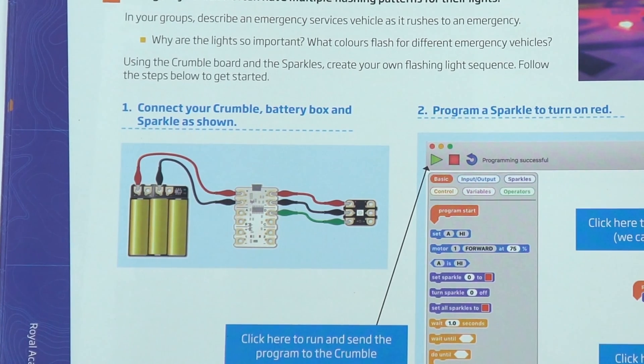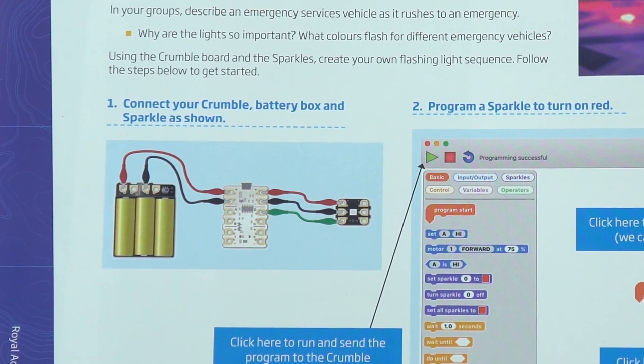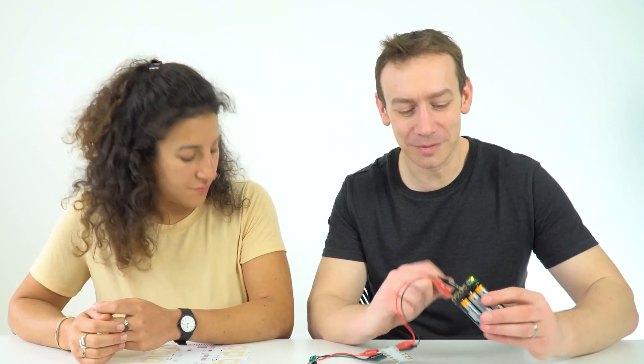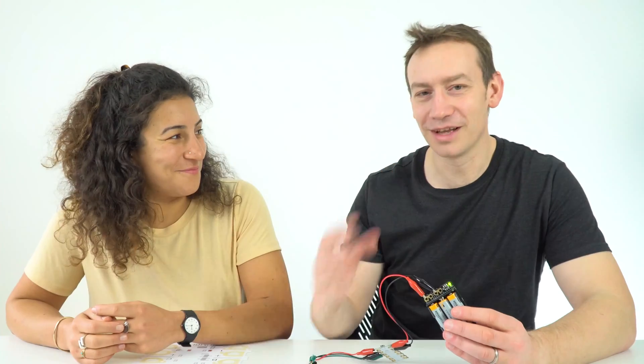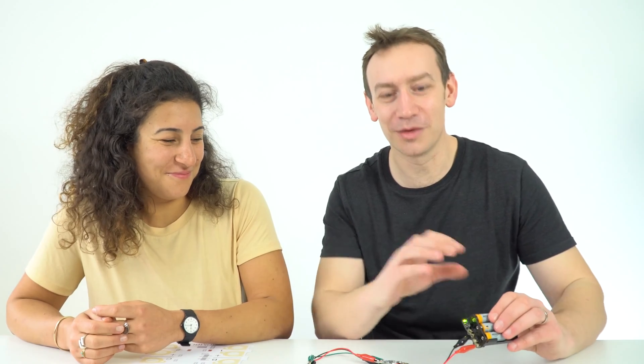What we've got here is a Crumble board connected to the battery pack. It's really important to turn it on so there's a green light, otherwise nothing's going to happen. Make sure you turn on the battery pack—that's probably one of the most common reasons people's equipment doesn't work.